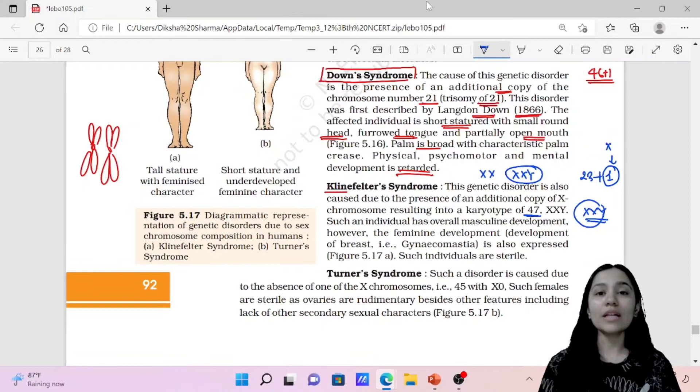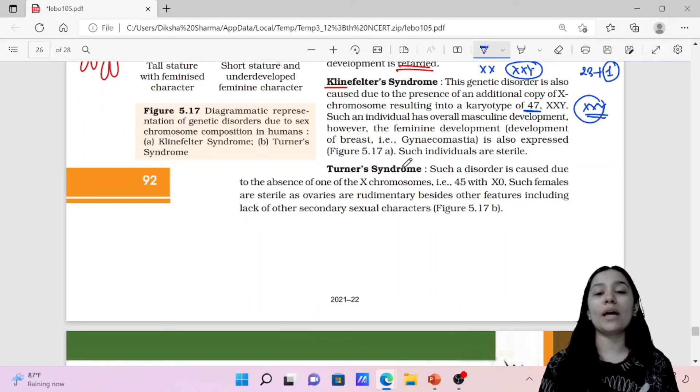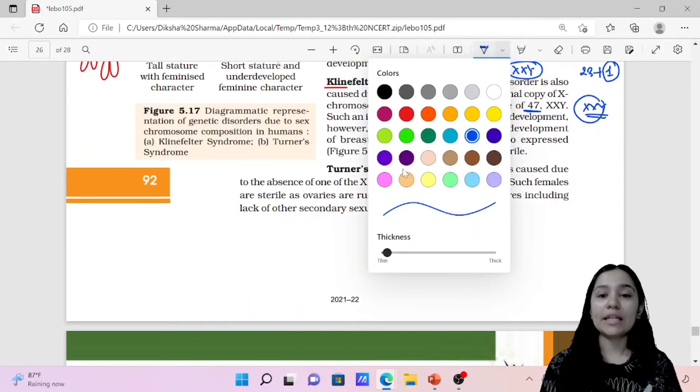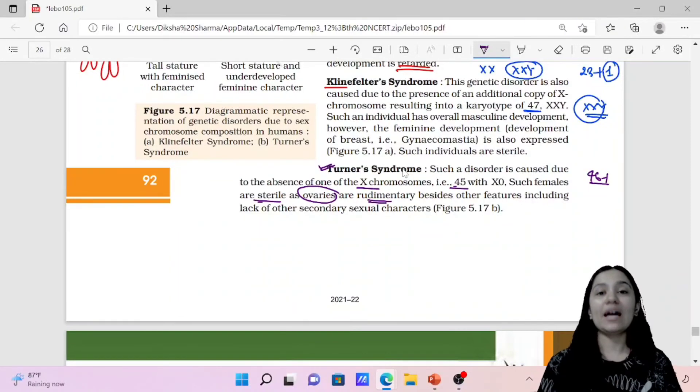Turner syndrome is an example of aneuploidy, 46 minus 1, so 45. Here, absence of one X chromosome occurs. In autosomes plus the sex chromosome, which should be double X, one X chromosome is absent. Such disorder is caused due to the absence of one X chromosome. And these females are sterile because the ovaries are rudimentary. Rudimentary means they are present but they are not able to function, and that's why we call that they are sterile and they are not able to reproduce, these females with Turner syndrome.